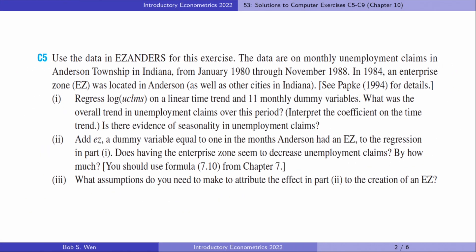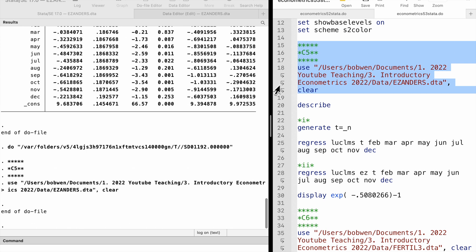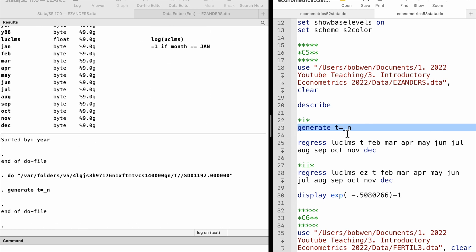We use the data on monthly unemployment claims in the fifth computer exercise. For part 1, we regress the log unemployment claims on the linear time trend t and 11 monthly dummy variables. We can generate the time trend t first. It equals the observation index underscore n.